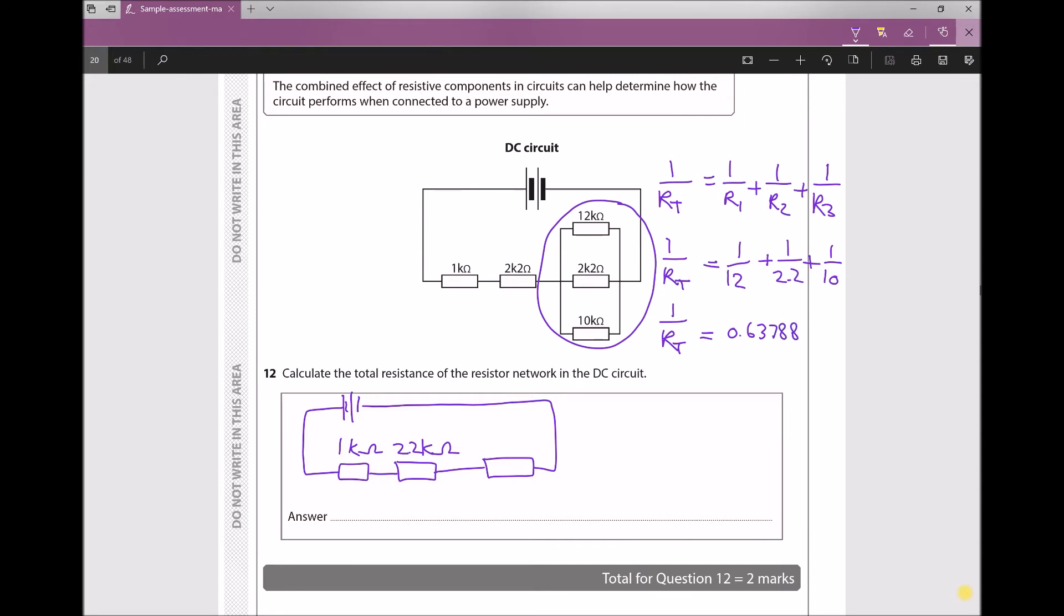However, we've not yet arrived at the final answer, because in order to get RT on its own, I need to do 1 over that value.